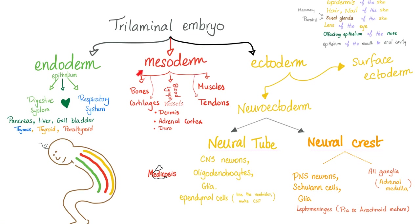Next is the Mesoderm — hashtag Connective Tissue. Bones and Cartilages. Muscles and Tendons. Blood and Lymph. Blood Vessels, Lymph Vessels. Dermis. Adrenal Cortex. Dura mater. Also, you have the Kidney, Spleen, and Tracheal Cartilages.